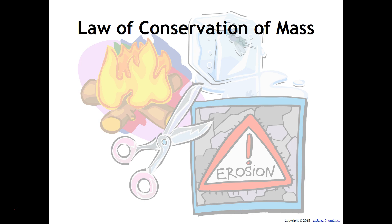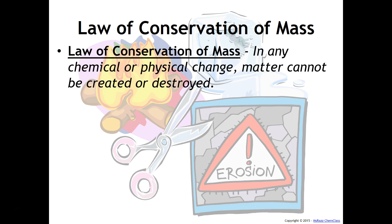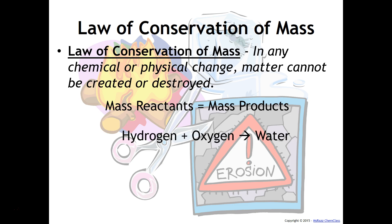Another important law that governs chemical reactions or any phase changes is the law of conservation of mass. The law of conservation of mass says that in any chemical or physical change, matter cannot be created or destroyed. This means the mass of the reactants you start with has to equal the mass of the products you end with — you can't lose mass and you can't gain mass out of nowhere. For example, hydrogen and oxygen reacting to produce water: if you start with 10 grams of hydrogen and 5 grams of oxygen, you need to end up with 15 grams on the other side.